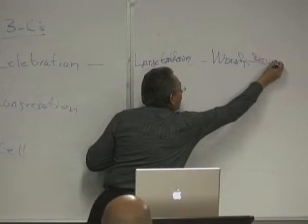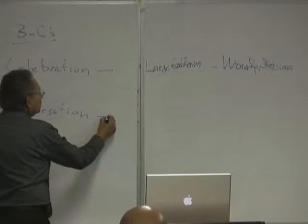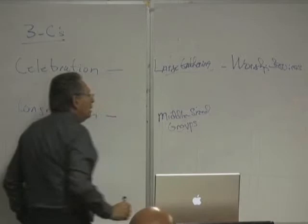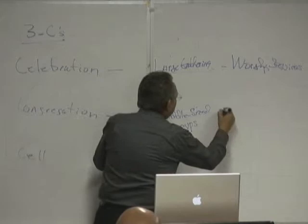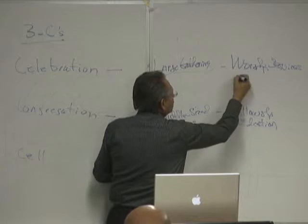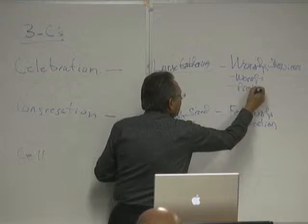The congregation is a middle-sized group. Middle-sized groups in the church basically come together for fellowship and education. The purpose of the large-sized group is basically worship and praise. The purpose of the middle-sized groups is fellowship and education.